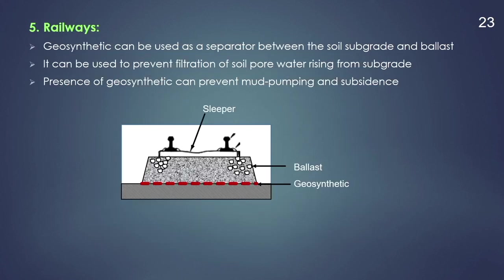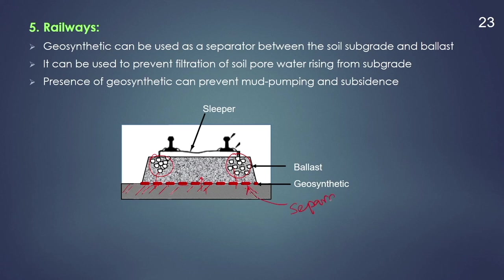Similarly, geosynthetic material can also be used for railways. If the rail is resting over soft soil with ballast on top, due to repeated loading, the ballast can migrate into the soft soil. Mud pumping can happen, causing subsidence. When we provide a geosynthetic layer, it acts as a separation layer preventing intermixing of ballast and soft soil. Geosynthetics can be used as a separator between the soil subgrade and the ballast, preventing filtration of soil pore water rising from the subgrade and preventing mud pumping and subsidence.